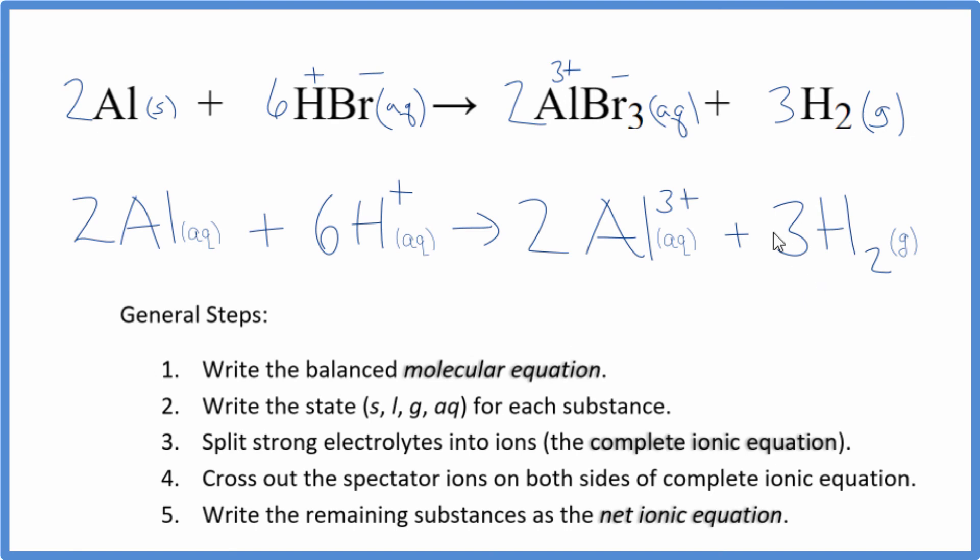So this is the balanced net ionic equation for Al plus HBr. You'll notice that we have six times 1+, that's 6+ here. Over on the product side, we have two times 3+, that's 6+. So charge is the same on both sides, and if you count the atoms up, they'll be balanced as well.